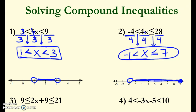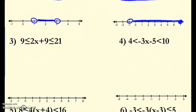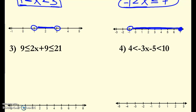Let's go on to some more difficult ones — number 3 and number 4. For number 3, I'm first going to subtract 9 from every side, just like I would if I was solving a multi-step equation. You can draw two lines if it helps — sometimes it can get a little overwhelming. So 9 minus 9 gives 0, which is less than or equal to 2x, and my same sign less than or equal to gives 21 minus 9, which is 12.